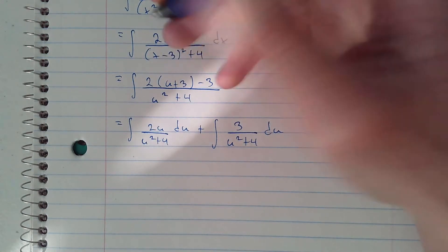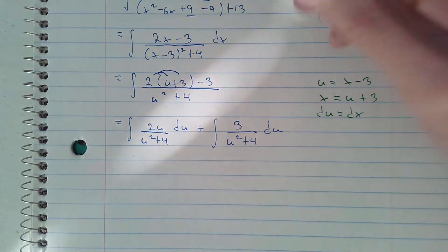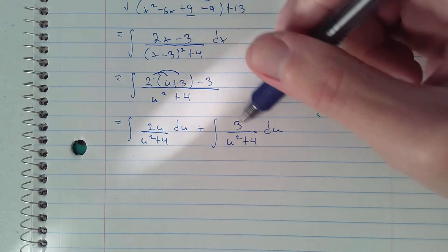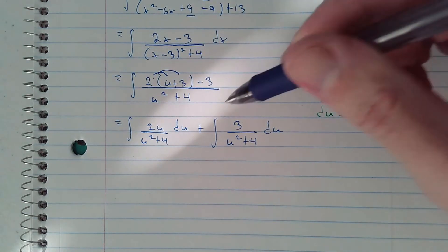What we did was distribute the 2 and we get 2u plus 6, and then 6 minus 3 is 3. Then you can split the integral.